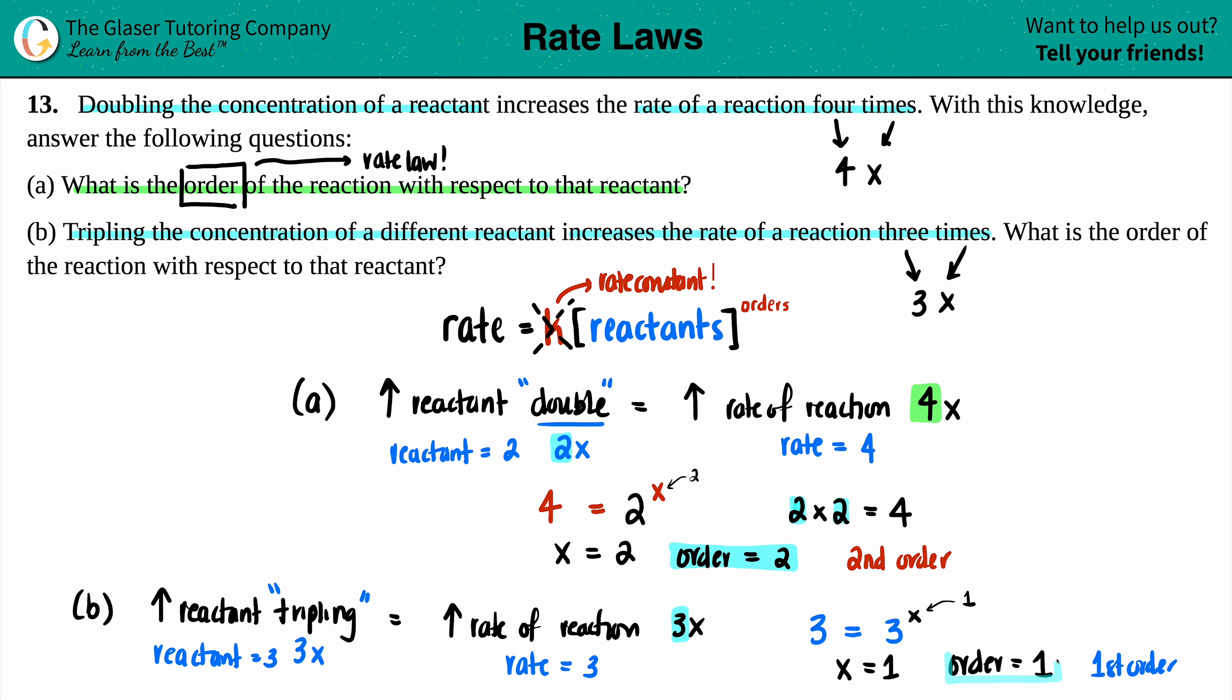And you can have different orders for different reactants in your reaction. So for the one reactant, that one was second order. And then for this one, the other order was first order. So for different reactants, you can have different orders. That's totally fine. And that's it. They asked for what's the order. So here we are. We found them out.